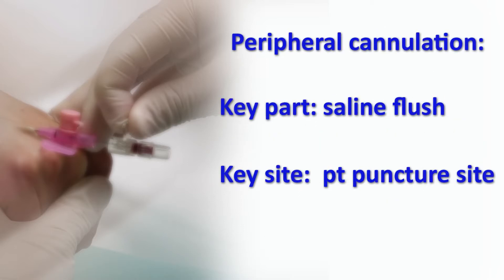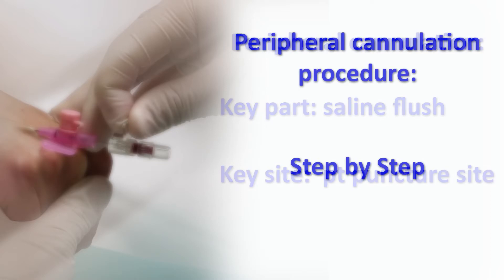In peripheral cannulation, these are the parts that will come in contact with the saline flush and the patient's puncture site. Peripheral cannulation procedure step by step.